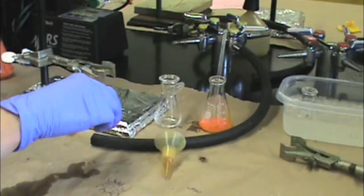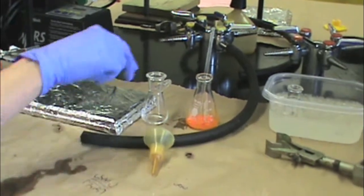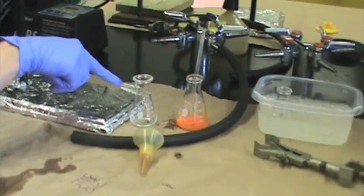In this video we will show you how to perform a filtration using a Hirsch funnel. You will need a vacuum line, a 25ml sidearm flask,